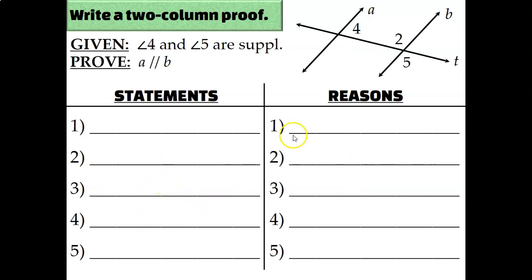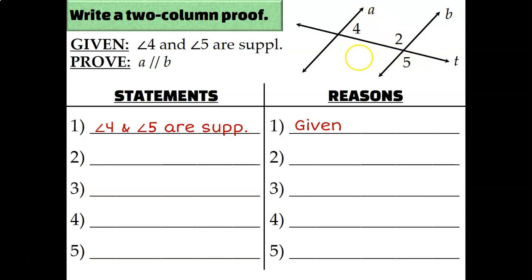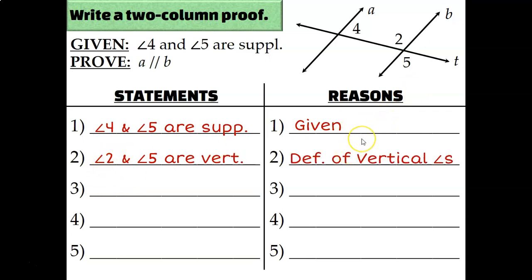For our next proof, we've got five steps to fill in. Write down that angle 4 and angle 5 are supplementary. Looking at the diagram, 4 and 5 are not a special kind of pair of angles, so I need to look elsewhere. For example, angle 2 and angle 5 are vertical angles, so I'll write that for statement number 2, with the reason being the definition of vertical angles.